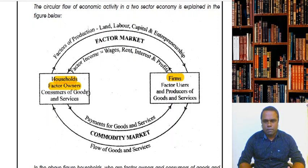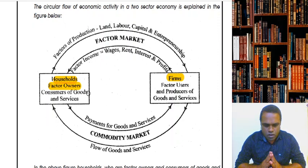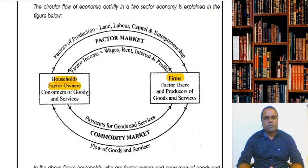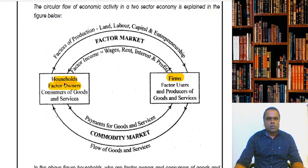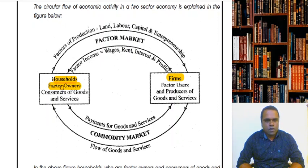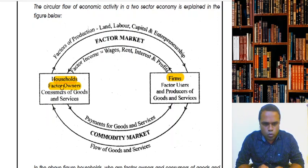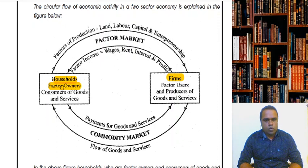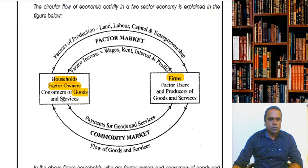Households are people like you and me — families, individuals. They are called factor owners because they own all the factors of production: land, labor, capital, and entrepreneurship. Households keep land, they provide labor, they supply capital from savings, and they can be entrepreneurs. So households are factor owners. Not only that, they are also consumers of goods and services — whatever goods and services are produced in the market, it is the households who consume them.